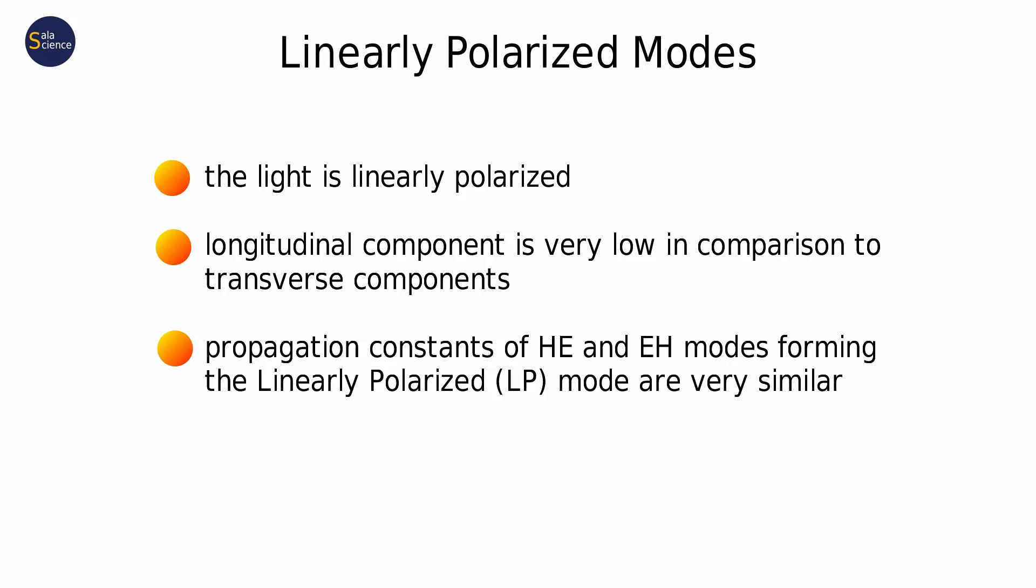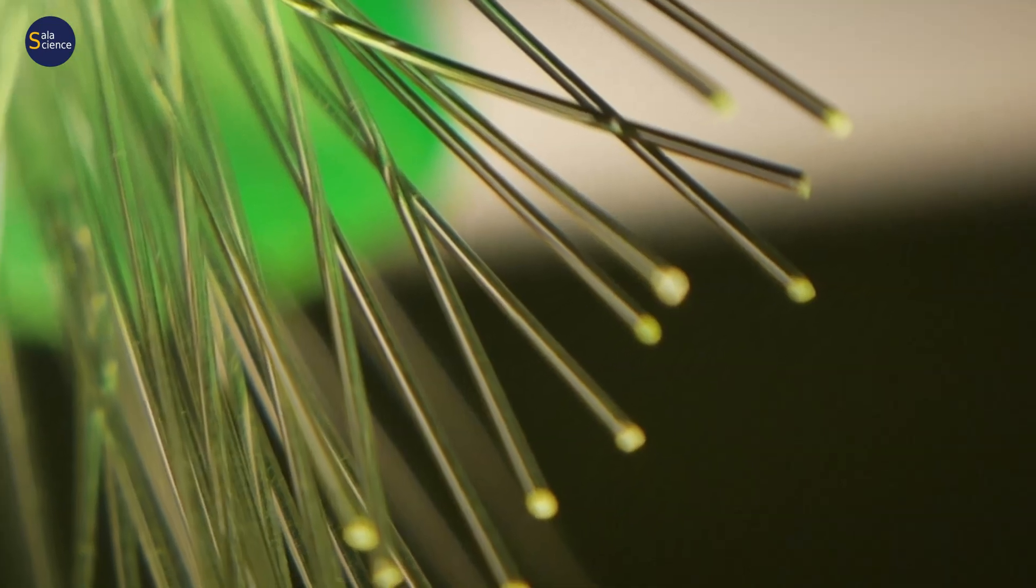There are mostly transverse components of the electric field. And as I said before, the LP modes for Q greater or equal to 2 consist of two modes, HE and EH, which have very similar, in theory identical, propagation constants.